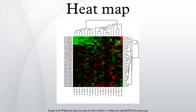Biology heat maps are typically used in molecular biology to represent the level of expression of many genes across a number of comparable samples as they are obtained from DNA microarrays.